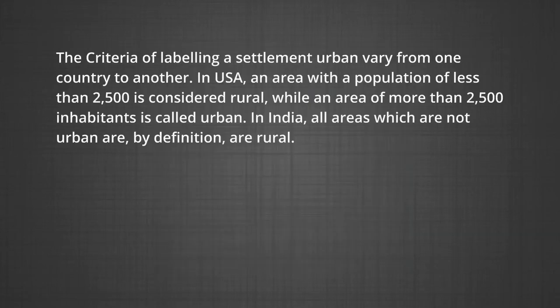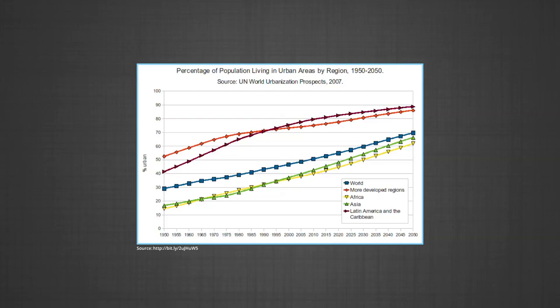The criteria of labeling a settlement urban vary from one country to another. In the USA, an area with a population of less than 2500 is considered rural while an area with more than 2500 inhabitants is called urban. In India, all areas which are not urban are by definition rural. Percentage of rural population is higher in farm-based agricultural countries while industrial regions have a higher share of urban population. The line graph shows the steady rise of population living in urban areas from 1950 to projected 2050.